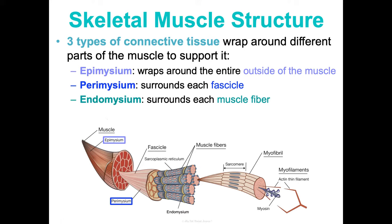The somatic motor neurons that activate skeletal muscle fibers are mainly located in your spinal cord. The neuron's cell body in the spinal cord has an axon that extends to connect to the muscle fiber it's signaling, forming a neuromuscular junction — also known as a motor end plate or myoneural junction. That's where the axon terminals meet the muscle fiber, with a synaptic cleft between them. With the exception of muscles in the head and neck, somatic motor neurons are located in the spinal cord.